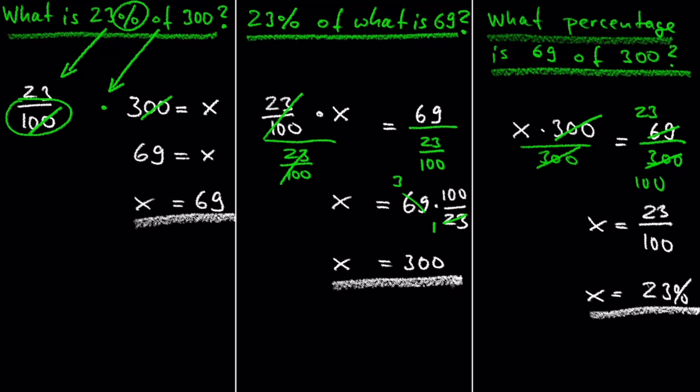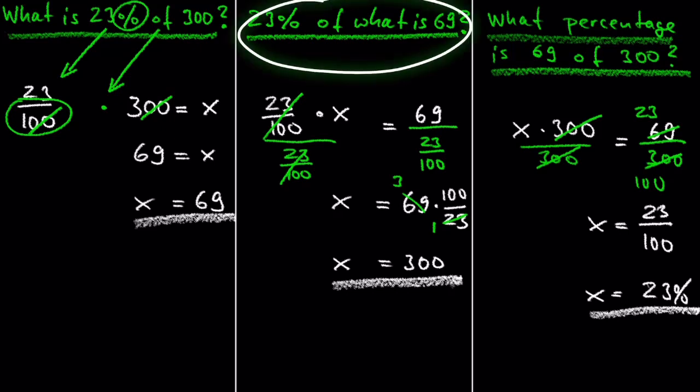The second case is when we ask the question, 23% of what is 69? Then the number in the middle is the unknown x.